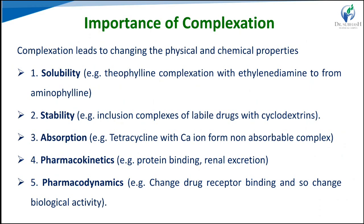Complexation can also reduce toxicity — for example, cyclodextrin effectively complexes with drugs to reduce the ulcerogenic effect of indomethacin and changes local tissue toxicity of promazines. Other applications include use as antidotes for metal poisoning, antibacterial activities, and anti-tubercular drugs. Para-aminosalicylic acid is known to form a cupric chelate complex, and the cupric chelate has shown greater in vivo anti-tubercular activity.